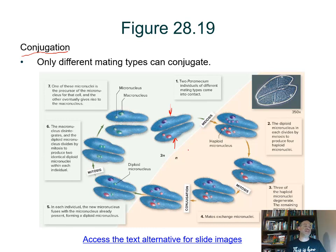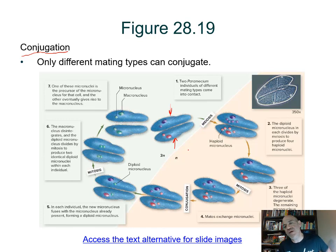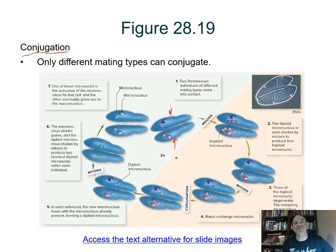Whatever the case, there's probably still some genetic variation in there. When they come together as two mating types, the process is called conjugation. When they combine, the micronucleus goes through meiosis. Right now the micronucleus is diploid with two full sets of chromosomes.